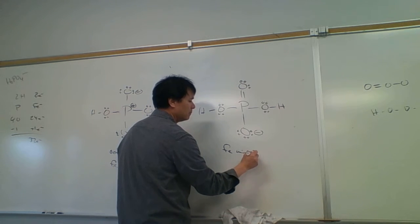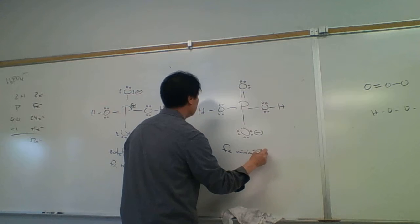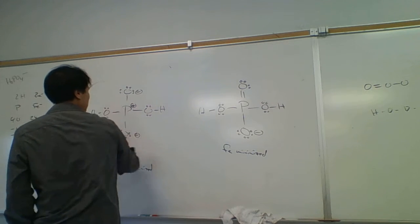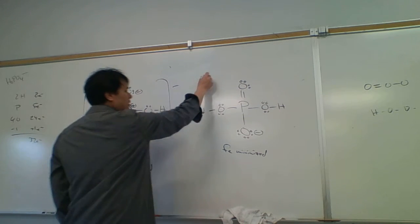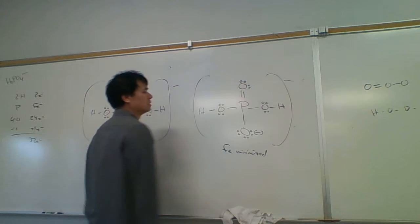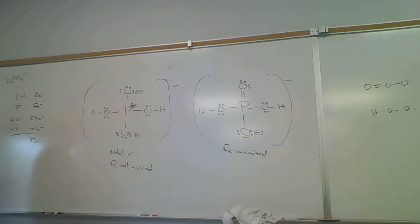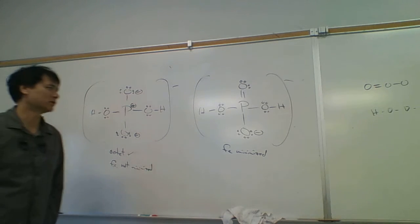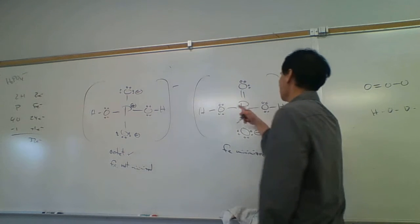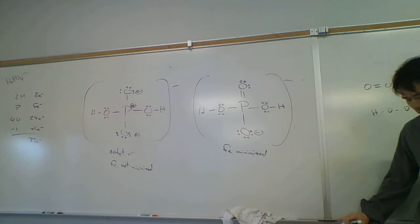We can't avoid having a negative charge since this is an ion. The sum of the formal charges gives the net charge of minus one. Now looking at phosphorus, it has 2, 4, 6, 8, 10 electrons around it.